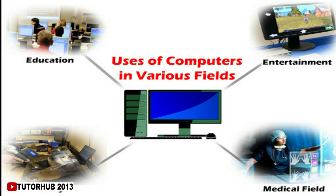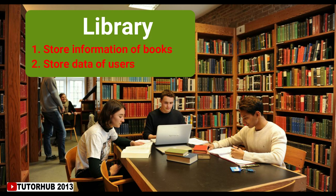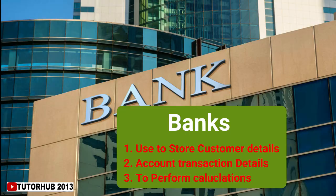Computers are widely used in places such as railway stations, libraries, banks, supermarkets, airports, and hospitals. In railway stations, computers are used to book tickets and store information such as arrival and departure time of trains and number of seats. In a library, computers are used to store the information of books and the library user data.